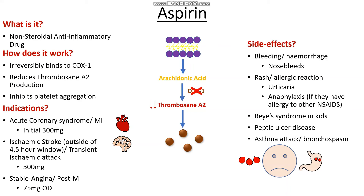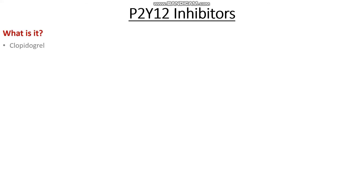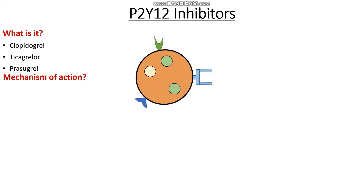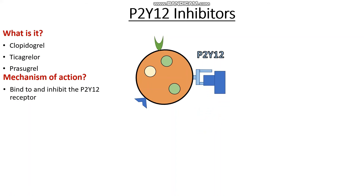So what about our next group of drugs? Our next group is the P2Y12 inhibitors. The drugs that fall into this category are the older clopidogrel, the newer ticagrelor, and the quite new prasugrel. Here you can see we have a platelet, and in blue we have the P2Y12 receptor, which when activated will activate our platelets. As the name suggests, P2Y12 inhibitors irreversibly bind to and block the action of the P2Y12 receptor. As a result, we stop ADP from binding to the P2Y12 receptor and thus stop further platelet activation.